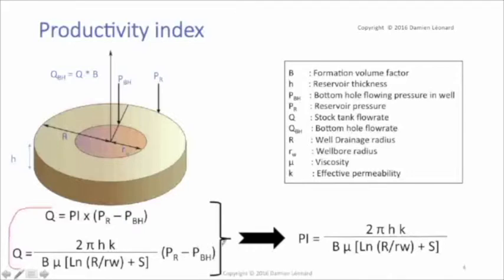From those two formulas, we can deduce that the productivity index equals 2 times pi times reservoir thickness times effective permeability divided by formation volume factor times viscosity times the logarithm of well drainage radius divided by wellbore radius plus the skin. This formula is valid in monophasic flow.